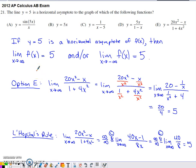This is problem 21 from the 2012 AP Calculus Multiple Choice Set. Non-calculator question tells us that the line y equals 5 is a horizontal asymptote to the graph of which of the following functions.